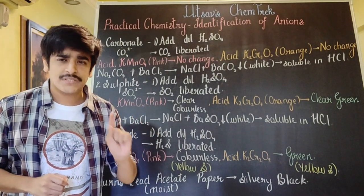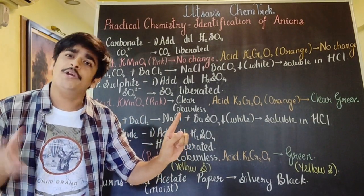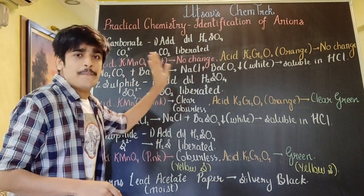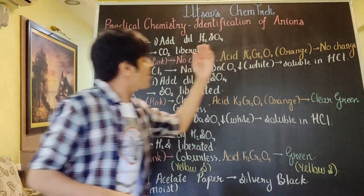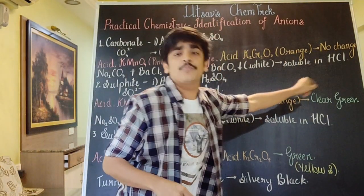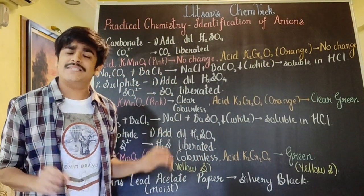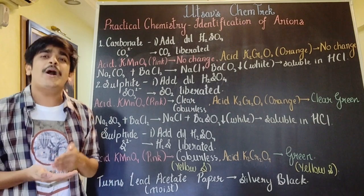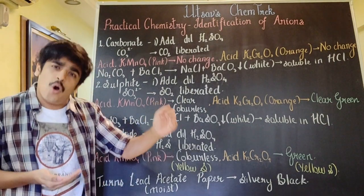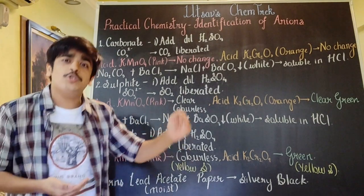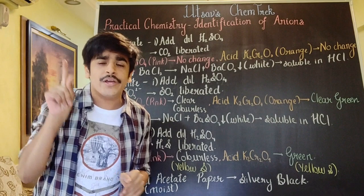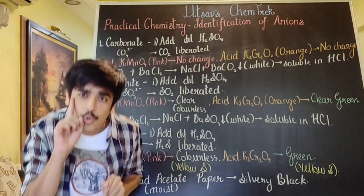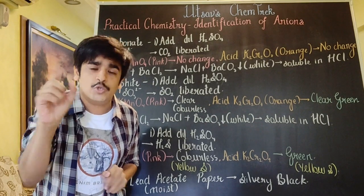When we pass carbon dioxide through both reagents, nothing is going to happen. Pink is going to remain pink and orange is going to remain orange. On the other hand, when I pass sulfur dioxide through both of them, the pink is going to become clear colorless and the orange is going to be clear green. Clear means that light rays can easily pass through — you can see through the test tube.